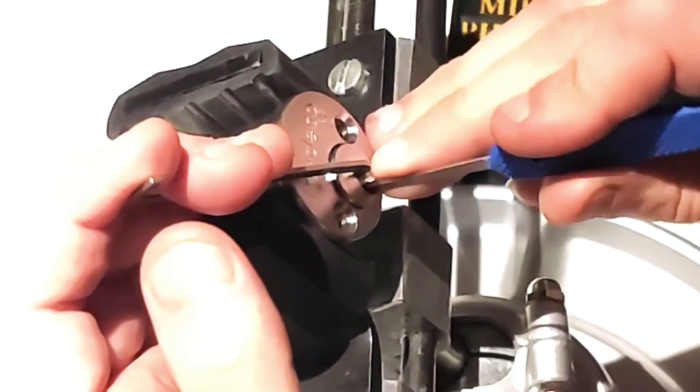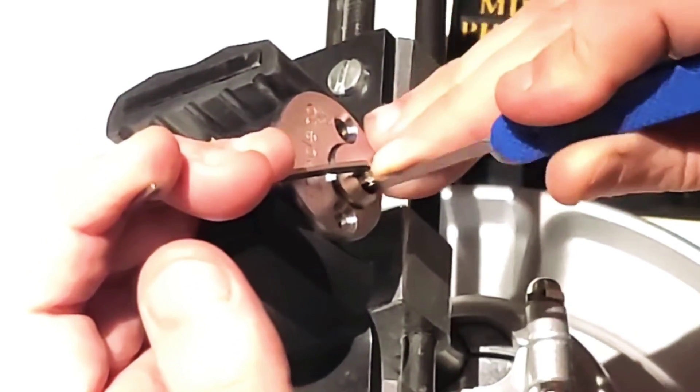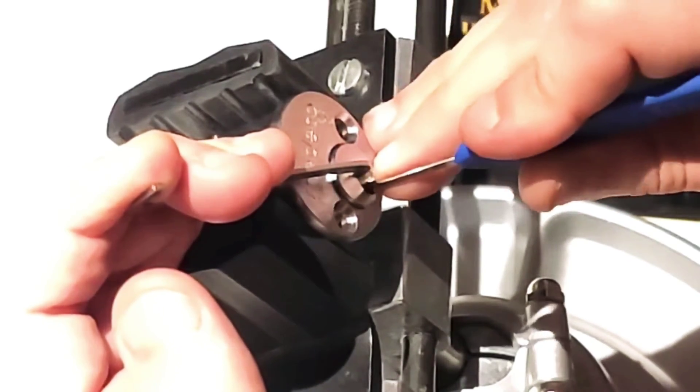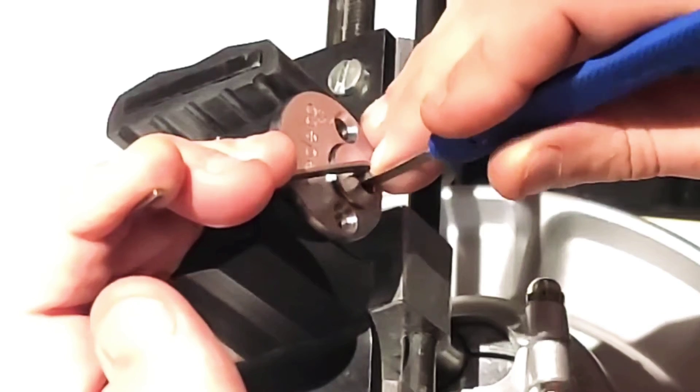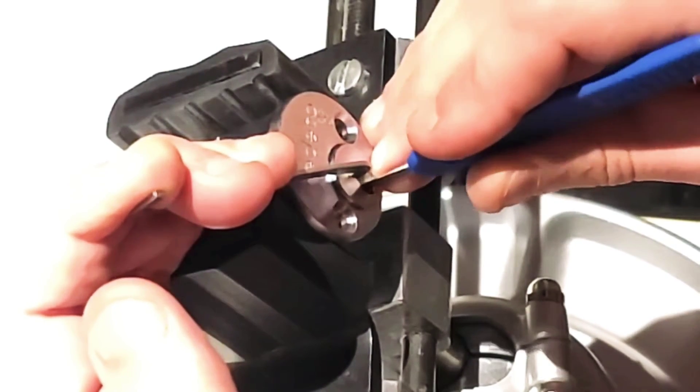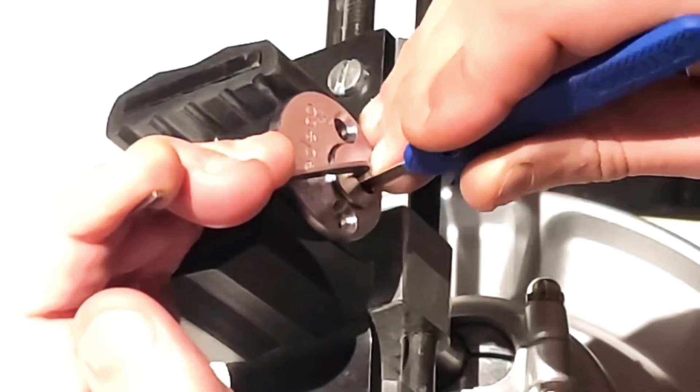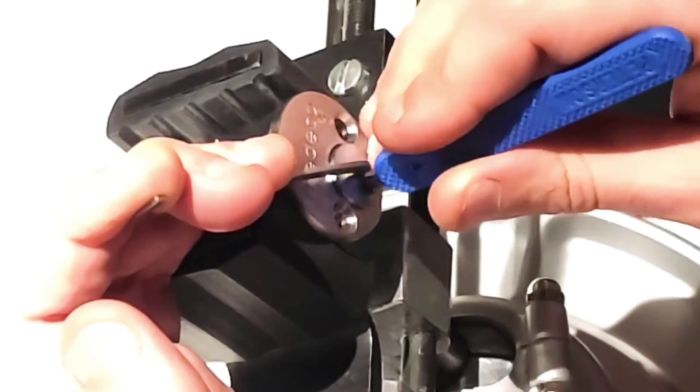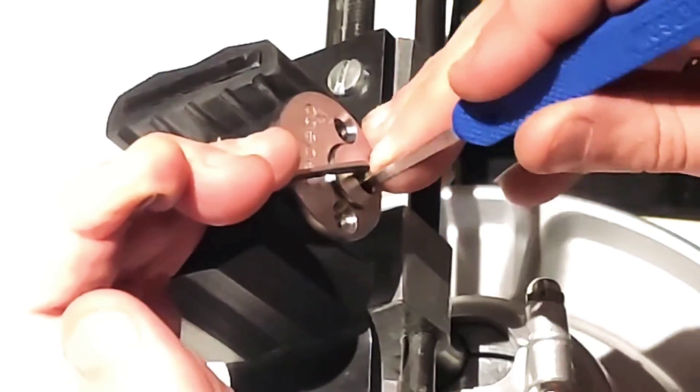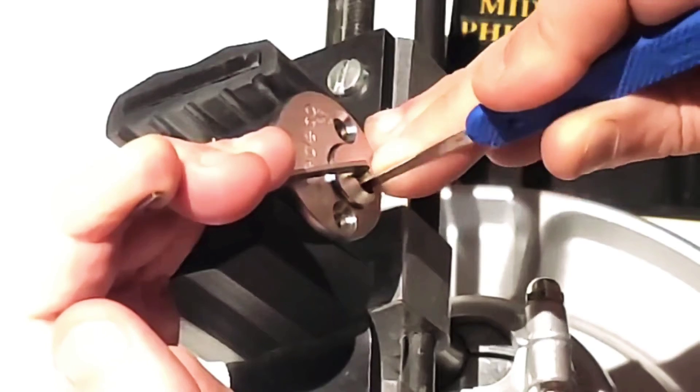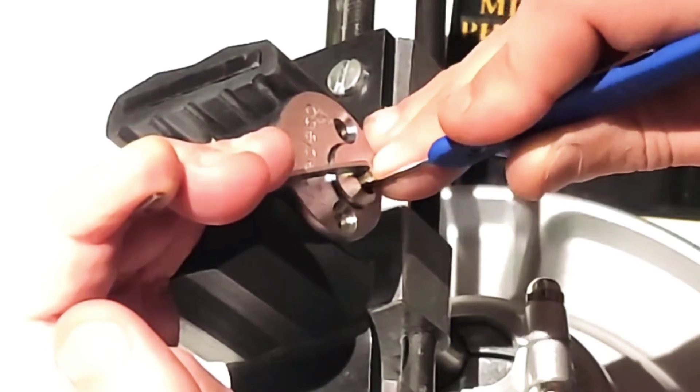When picking counterclockwise, it's important to keep in mind that the sidebar binds first, so these pins will actually bind before they are set to the shear unless they are rotated properly. The sidebar binds first, so you've got to try to go through these pins and we can actually feel if they're rotated properly before we even try to lift them to the shear line.